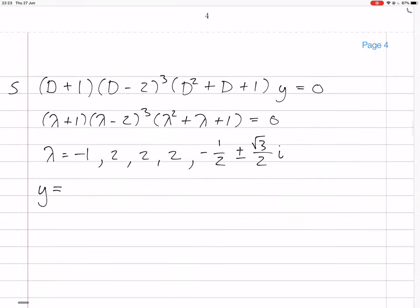The things we get, yeah, sorry. So the point is that this thing is y equals a1 e to the minus x plus a2 e to the 2x plus a3 x e to the 2x plus a4 x squared e to the 2x.